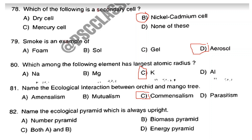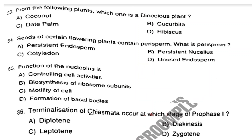Question number 82. Name the ecological pyramid which is always upright. The answer is Option D: Energy pyramid. Question number 83. From the following plants, which one is a dioecious plant? Answer is Option C: Date palm. Question number 84. Seeds of certain flowering plants contain perisperm. What is perisperm? The answer is Option B: Persistent nucellus.